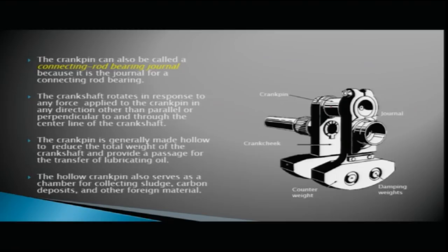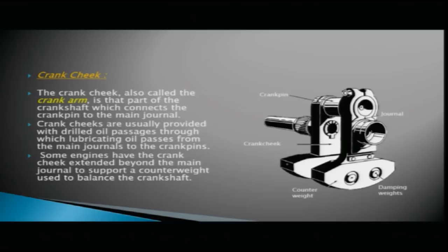Coming to crank cheeks — also called crank arms — this is the part of the crankshaft that connects the crank pin to the main journal. Crank cheeks are usually provided with drilled oil passages through which lubricating oil passes from the main journals to the crank pins.